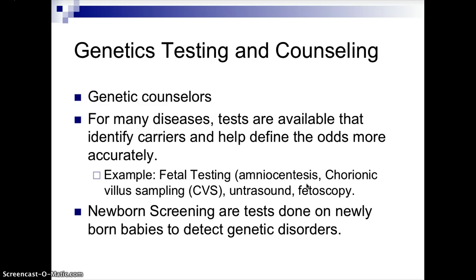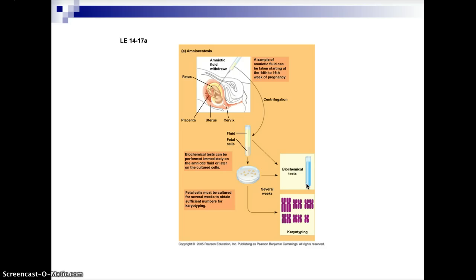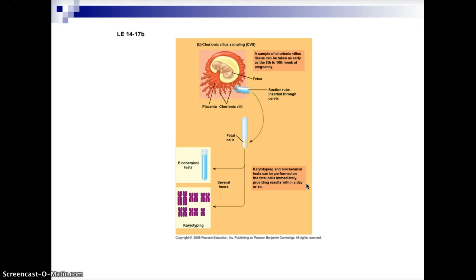For genetic testing and counseling, genetic counselors can perform pedigree analysis. For many diseases, tests are available to identify carriers and define the odds more accurately, such as fetal testing including amniocentesis, chorionic villus sampling or CVS, ultrasounds, and fetal scopes. Newborn screening tests are also done on newly born babies to detect genetic disorders. Amniocentesis involves withdrawing amniotic fluid, which can be sampled between 14 to 16 weeks of pregnancy to do biochemical tests and karyotype cultured cells. CVS involves taking a tissue sample as early as 8 to 10 weeks of pregnancy.